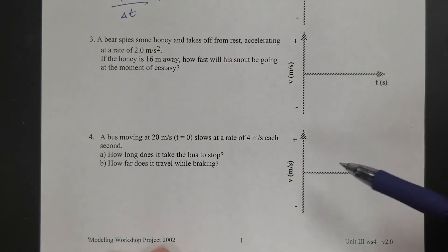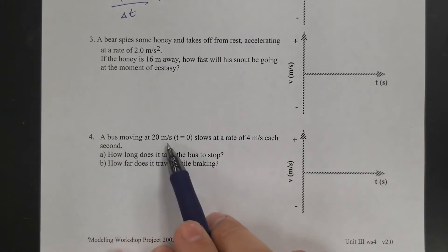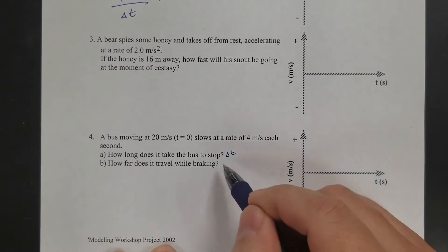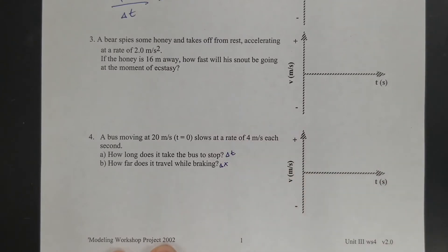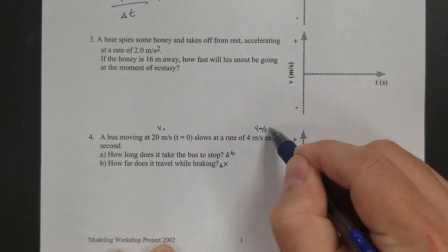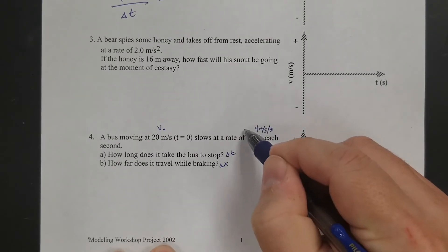Okay, so let's look at one that's a little more complicated if you were solving it with equations. So this one, a bus moving 20 meters per second slows at a rate of 4 meters per second each second. How long does it take the bus to stop? So that's asking for time. And how far does it travel? That's asking for displacement. So let's get what I have. My 20 meters per second, that's my initial velocity. And it slows at a rate of 4 meters per second each second. So that's saying 4 meters per second per second, which means this is the acceleration.